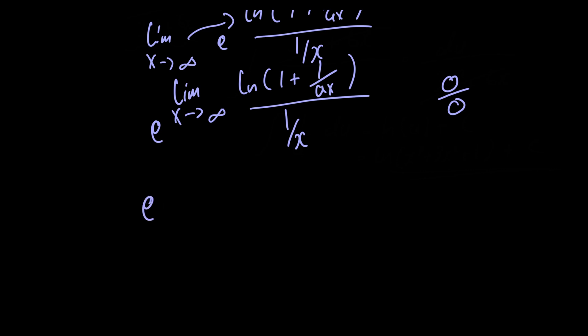Doing so gives us e raised to the limit as x approaches infinity. The derivative of the numerator is just minus 1 over x multiplied by a times x plus 1 and the derivative of the denominator is just minus 1 over x squared.